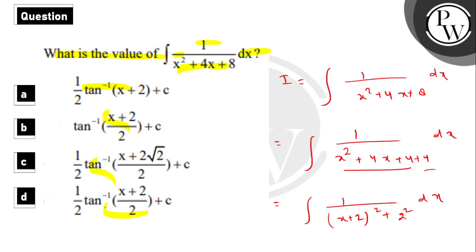Option number 1 upon 2 into tan inverse x plus 2 upon 2 plus constant of integration c. That is option number d.